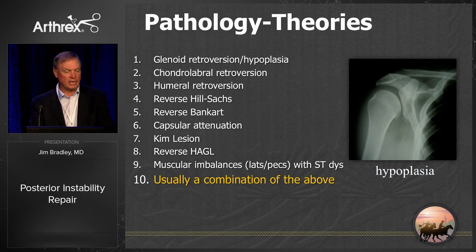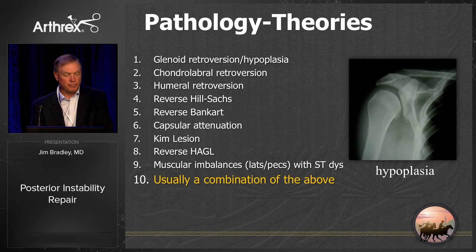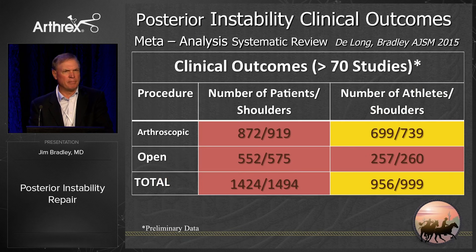Pathologic theories of posterior instability are many: retroversion, chondrolabral retroversion, humeral retroversion, Hill-Sachs lesions, capsular attenuation, and muscular imbalances in throwers are very common. But in my mind, it is usually a combination of the above that gets them into trouble.